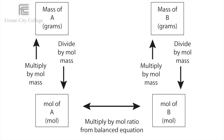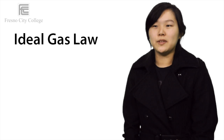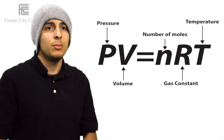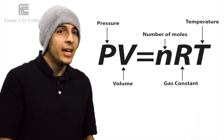The ideal gas law is an equation describing the state of a hypothetical ideal gas. It is a good approximation for the behavior of many gases under many conditions. The most frequently introduced form of the equation is PV = nRT, where P is the pressure of the gas (often in atmospheres, atm), V is the volume of the gas (usually in liters, L), n is most often in moles of gas, and T is the temperature of the gas, usually in Kelvin (K).